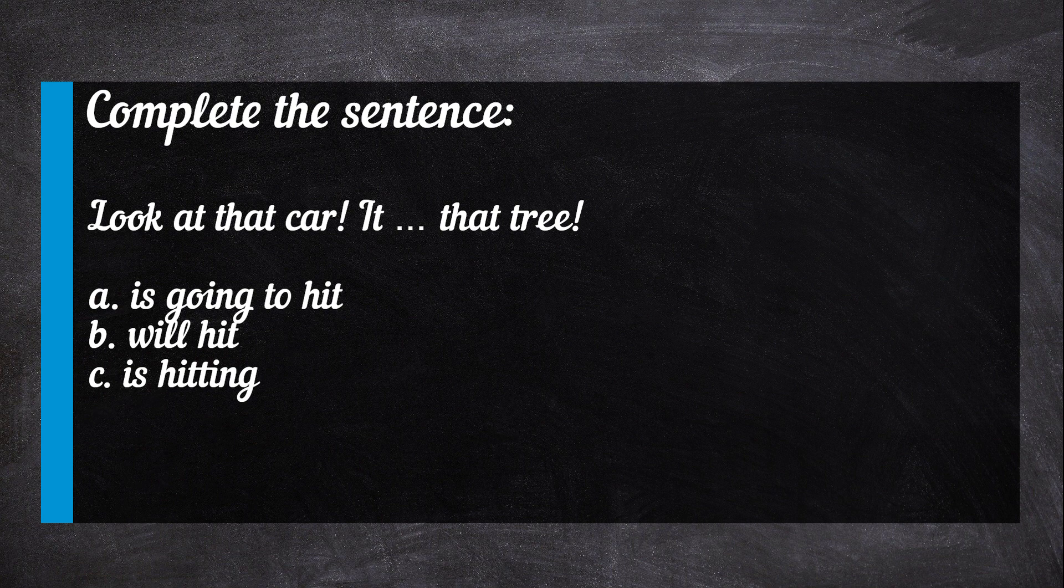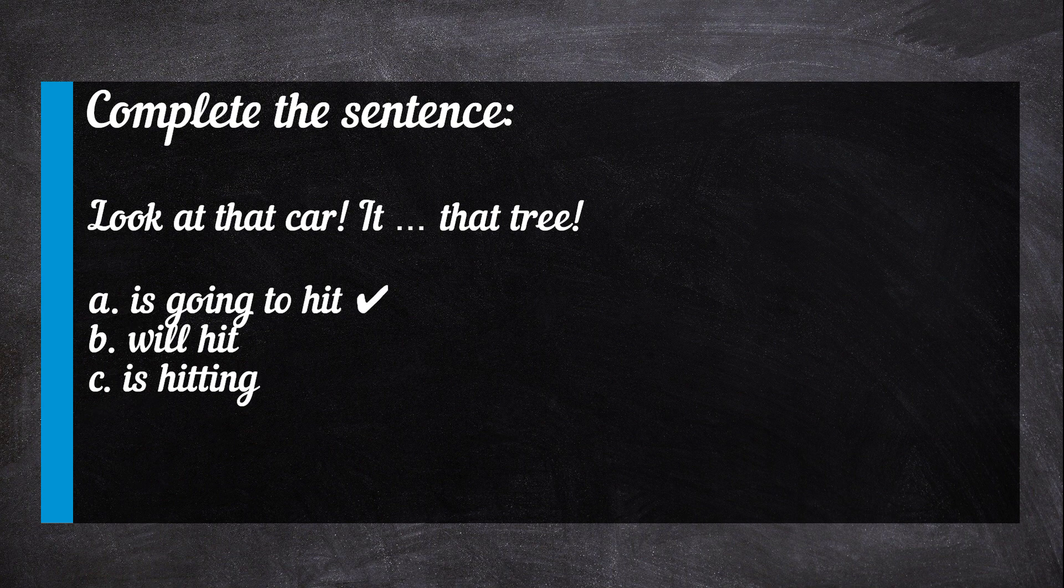Complete the sentence. Right answer is A. Is going to hit. Going to is used if future events evident from something in the present.